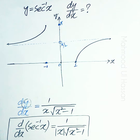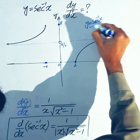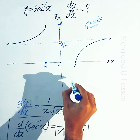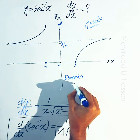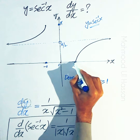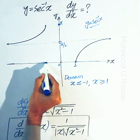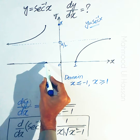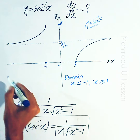Looking at the graph of y equals secant inverse of x: the domain of secant inverse of x is x less than or equal to minus 1 and x greater than or equal to plus 1. That is, the right side of 1 and the left side of minus 1 are in the domain. The open interval from minus 1 to 1 is not in the domain of secant inverse of x.